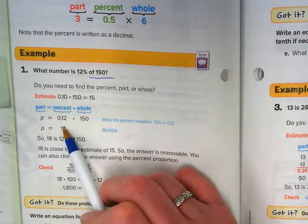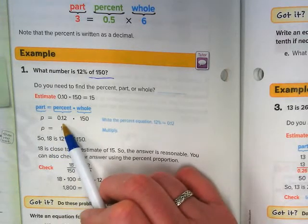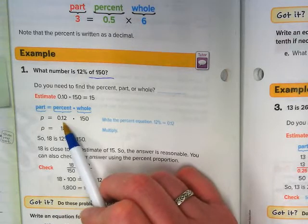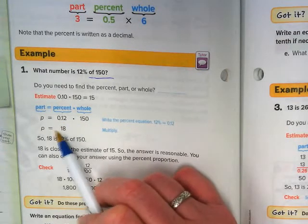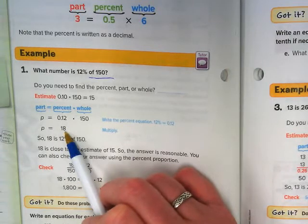If we try it with the actual number, 12% is going to get converted to 0.12 times 150, and it would give us 18.